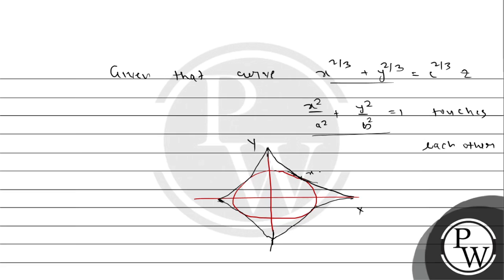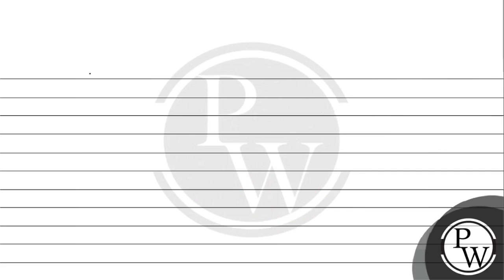Let us suppose the point of tangency is x1, y1. We will find out the tangent at this point. First, we differentiate x to the power 2 by 3 plus y to the power 2 by 3 equals c to the power 2 by 3.